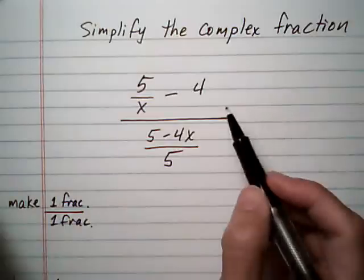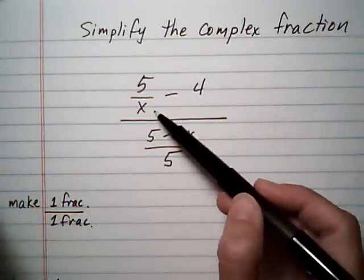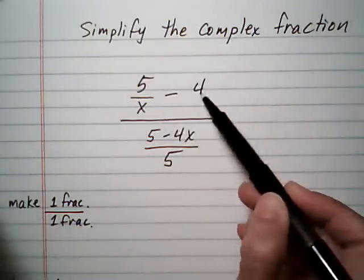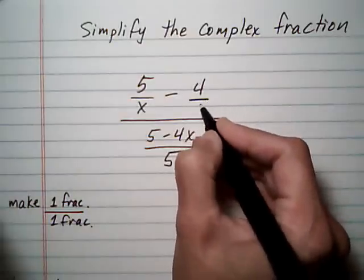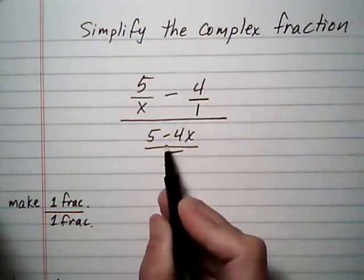Simplify the complex fraction. Here we have a problem that's a little bit different than the others we've done, because on the top here we have two different fractions, and we'll think of the 4 as 4 over 1, and on the bottom we have a single fraction already.